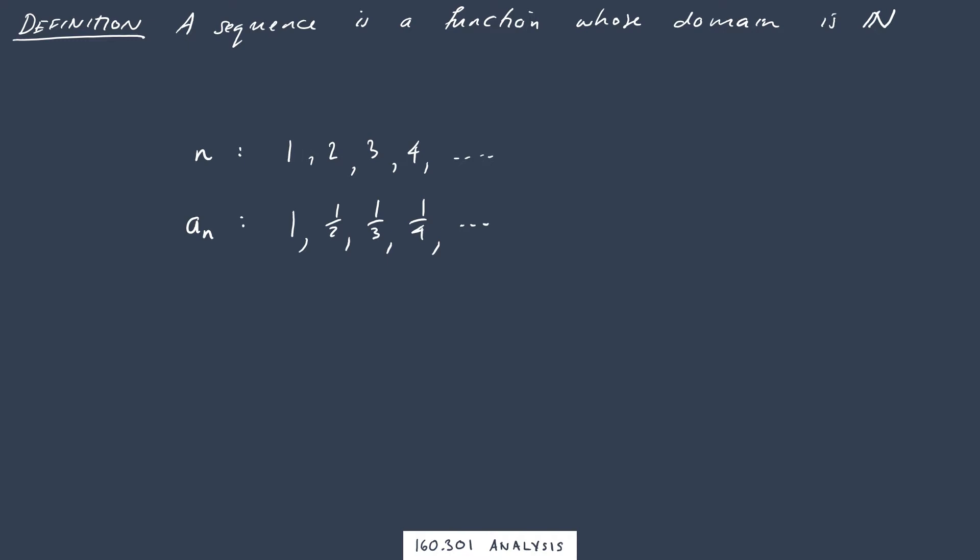Another way to visualize this is to draw a picture. So for this particular sequence we start here at 1, we're going 1, 1 half, 1 third, 1 quarter, 1 fifth, 1 sixth, etc. So that's 1 there, 2, 3, 4, etc.